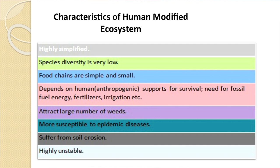Characteristics of human modified ecosystems are: they are highly simplified; species diversity is very low; food chains are very simple; they depend upon human or anthropogenic support for survival in the form of fossil fuel energy, fertilizer, irrigation, etc. They attract large numbers of weeds because we have modified the environment, leading to invasions by organisms that find such environments suitable. They are more susceptible to endemic diseases, suffer from soil erosion, and are highly unstable.